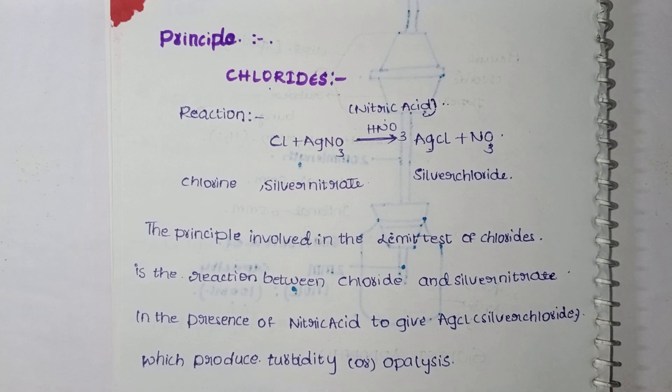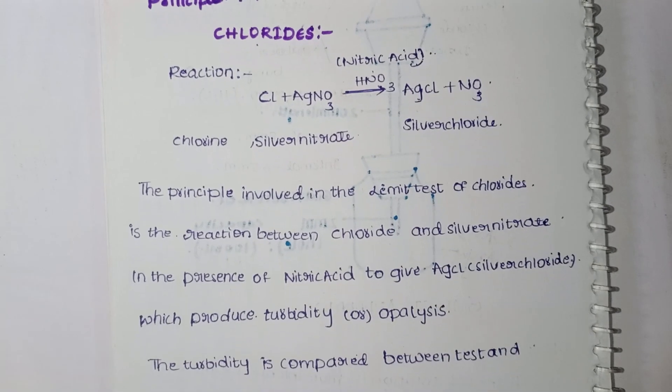So most important is that we need to definitely define turbidity and opalescence. So we need to define it; otherwise, we won't get complete marks. So here we compare the turbidity or opalescence between the test and the standard, and we must mention this. The turbidity is compared between the test and the standard.